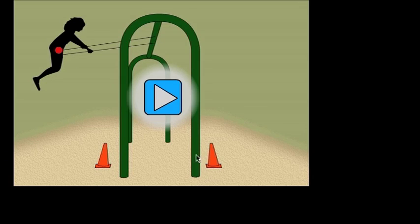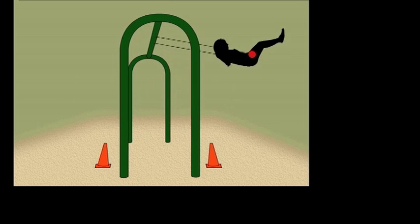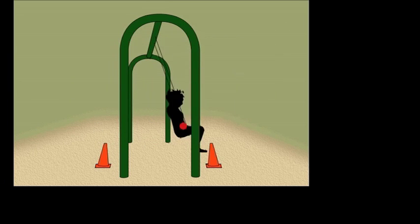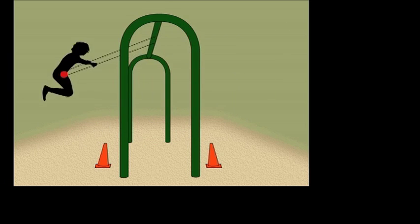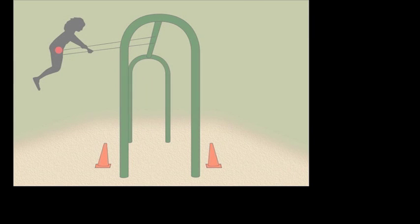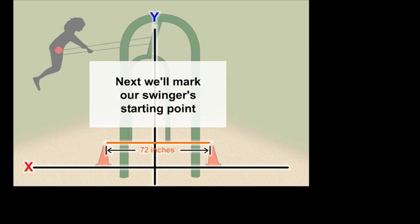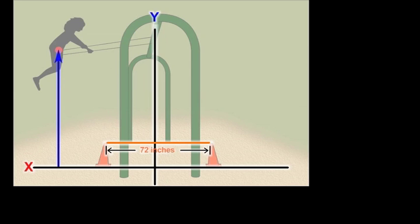We can use the animation of the swinger to help students see how the horizontal and vertical positions of the swinger change over time. We will overlay a coordinate system on the swinger so that the middle position is zero. We will mark her starting position, and we can see that her starting vertical position is shown by the blue arrow and her starting horizontal position is shown by the red arrow.